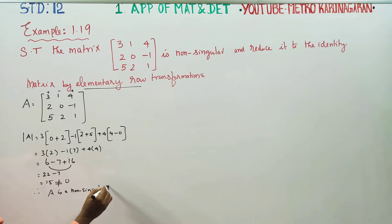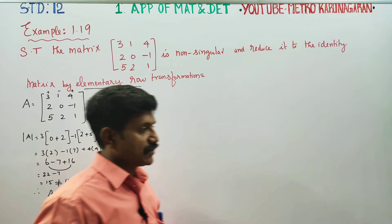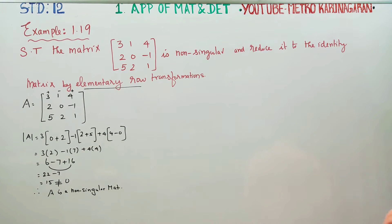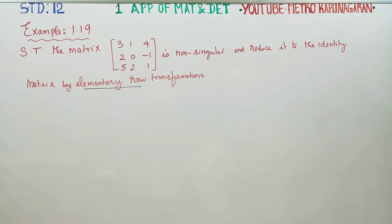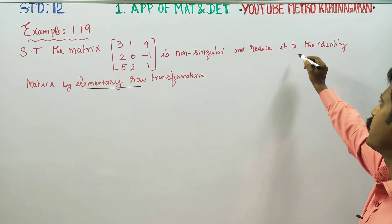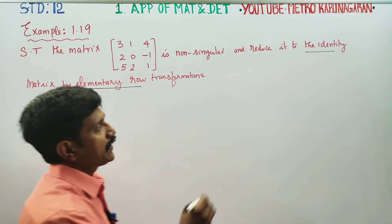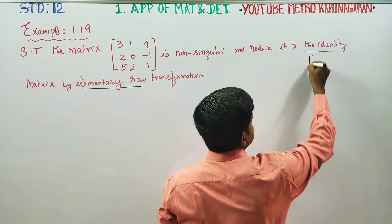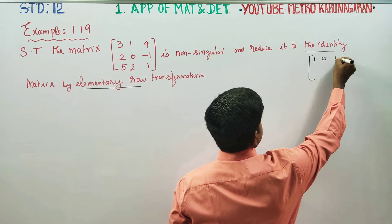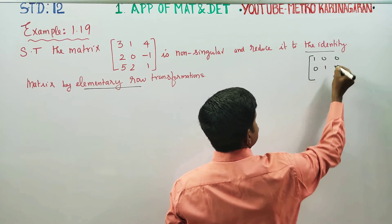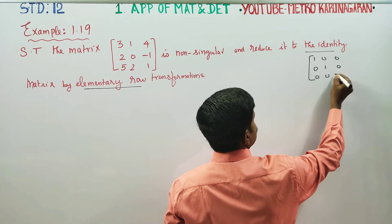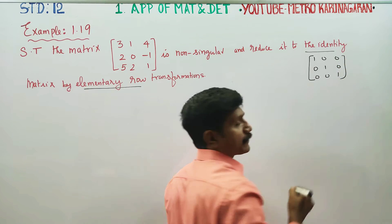Therefore, A is a non-singular matrix. Since it is non-singular, the main idea is to reduce the matrix to an identity matrix. The identity matrix looks like: 1, 0, 0 in row 1; 0, 1, 0 in row 2; 0, 0, 1 in row 3.